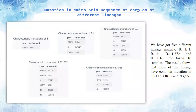The next result is the mutation amino acid sequence of samples from different lineages. These are the five lineages — B, B.1, and B.1.1.1 variants — which we have found for our 10 samples. The results show that most lineages have common mutations in ORF1B, ORF8, and the N gene.